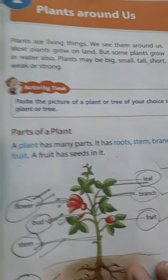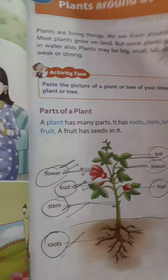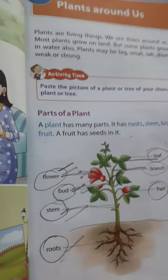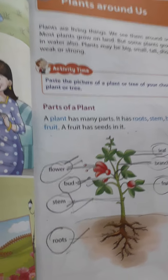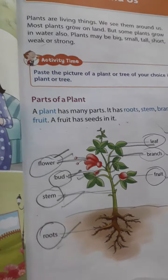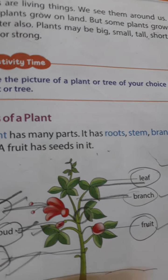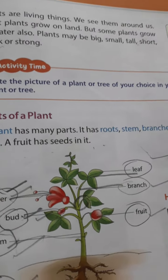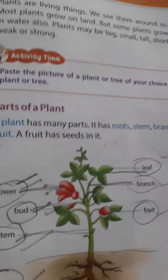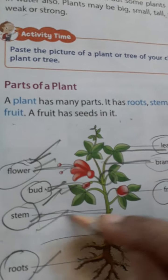Some plants like the banyan and neem are very big. The rose shrub plant is small, and herbs are also very small. Plants have many parts: roots, stem, branches, flower, fruits, bud, and more.